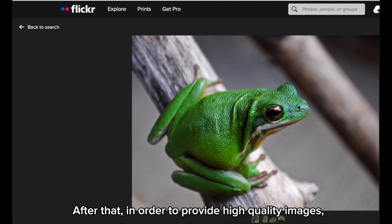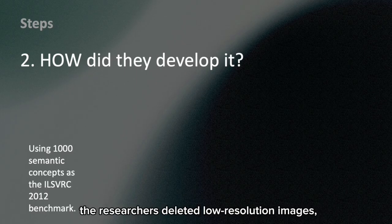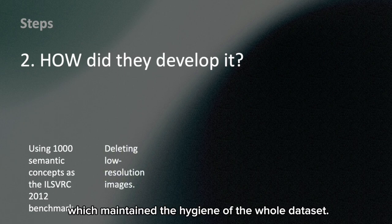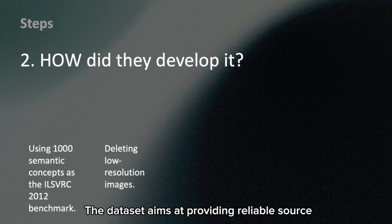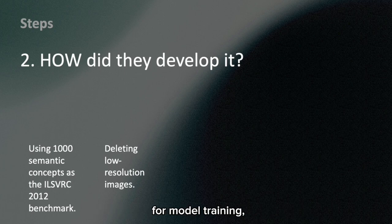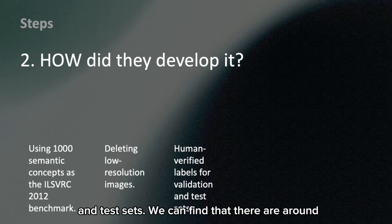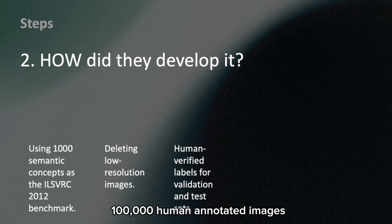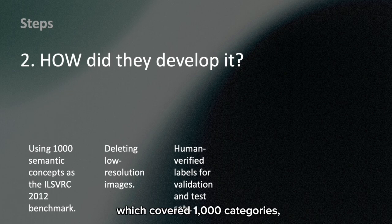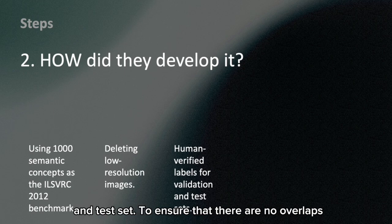In order to provide high-quality images, the researchers deleted low-resolution images, which maintained the hygiene of the whole dataset. The dataset aims at providing a reliable source for model training, so it was separated into training, validation, and test sets. There are around 100,000 human-annotated images covering 1,000 categories, equally split as validation set and test set.